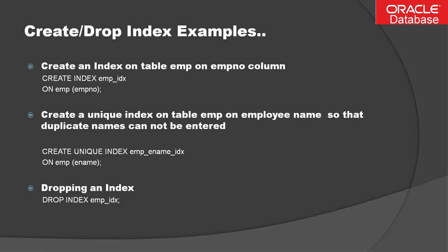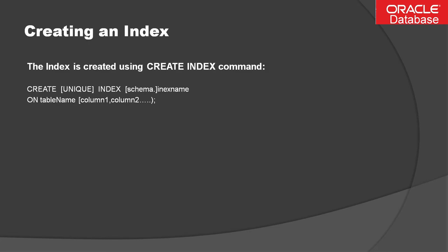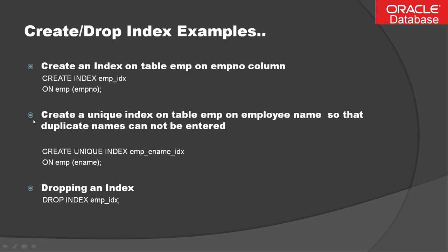To create and drop indexes: the general syntax to create an index is CREATE INDEX emp_index ON emp (employee_number). Note that if employee number is already declared as a primary key, you cannot create another index on it because Oracle automatically creates an index on primary key columns. If it is not a primary key, you can create an index on it.